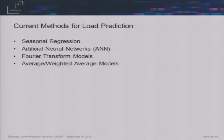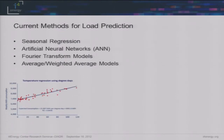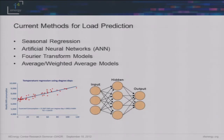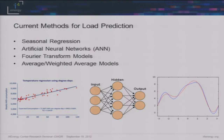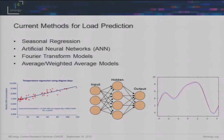There are current methods for load prediction that we see often: seasonal regression or temperature regression, basically looking at different parameters and trying to fit data. A lot of times you see piecewise regression models — this is a linear temperature regression just trying to make relationships. You also see artificial neural networks, which are a little more complex with a hidden layer. And then there are Fourier transform models. Each of these has been explored: Lawrence Berkeley National Labs has done regression models, artificial neural networks have been used extensively in power markets, and Texas A&M developed a Fourier transform model.